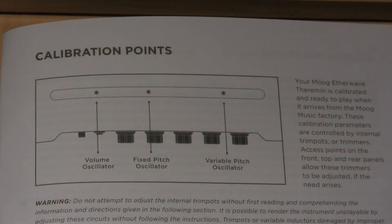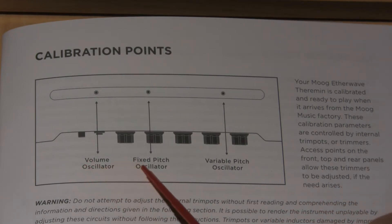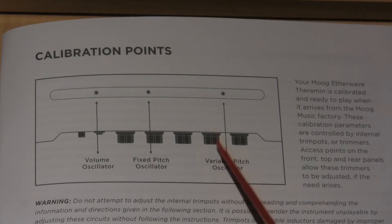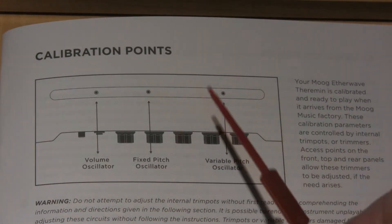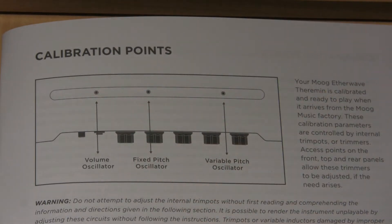Removing that plastic insert gives you access to the trim pot for the volume oscillator, the fixed pitch oscillator, and the variable pitch oscillator. There are a number of things that you can do, either in combination or individually, with those trim pots, and we'll talk about that in a later tutorial. But for now, let's look at removing the plastic insert.